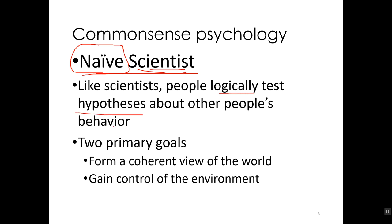Like scientists, everyday people logically test hypotheses about other people's behavior. You want to know why a person behaves in a certain way, so you develop hypotheses — for example, 'I think that person behaves that way because they're a nice person.' Then you collect information to test that hypothesis. We do that for two primary goals: one is to form a coherent view of the world, just to understand what's going on. Human beings seem to have the desire or drive to understand the world and to master it. The other primary goal is to gain control of the environment, because if I know somebody is a nice guy, I can use that to predict what would happen in interactions with them.